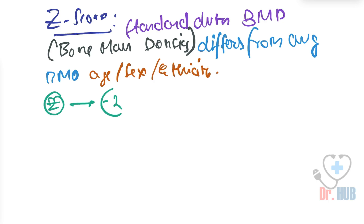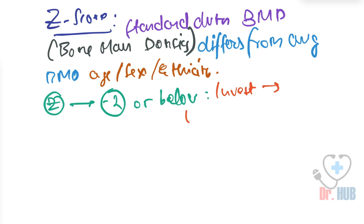If you see a Z-score of 2 or below, this basically triggers the investigation for an underlying disease.